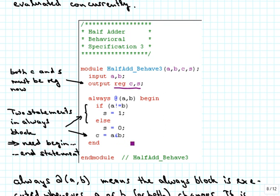Whenever you have more than one statement in an always block, you have to use the keywords begin and end to encapsulate the commands belonging to that always block, so the compiler knows which parts belong to the same always statement. The sensitivity list remains the same as before. The if-else statement is the same as before. And the carry is now computed the same as before but without the assign keyword in front of it. If you were to write assign inside an always block, Verilog would complain, because it does not want to assign anything to a net or wire inside an always block — that has to go to a register.